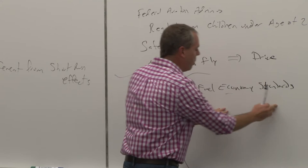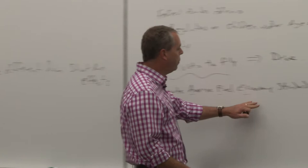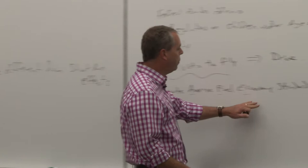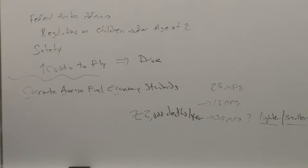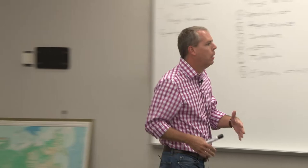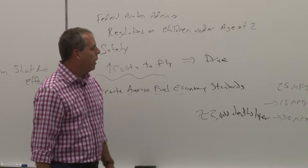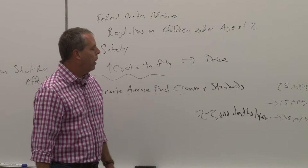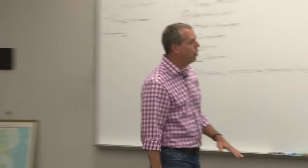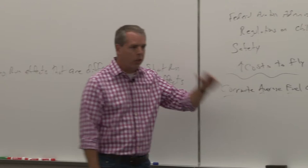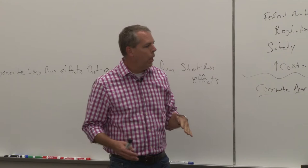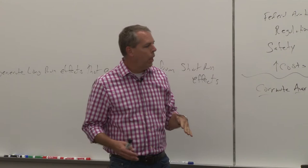And, in fact, economists have figured out, using things like regression analysis and things like that, that the corporate average fuel economy standards are responsible for approximately 2,000 deaths per year from auto accidents. It changes the structure of cars on the road enough. And you can sit there and you can analyze the accidents and who is driving these cars and why they're driving these cars. And you can say, we've figured out that there's about 2,000 people that die every single year on the highways, is because of the corporate average fuel economy standards. It puts people into really small, really light cars.